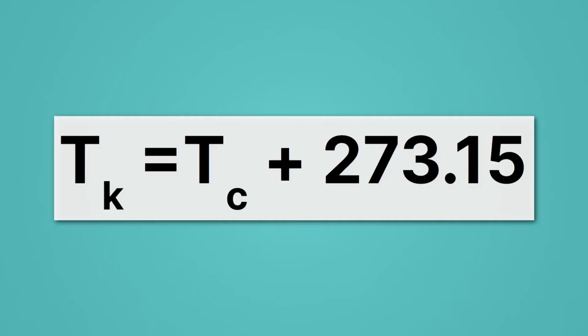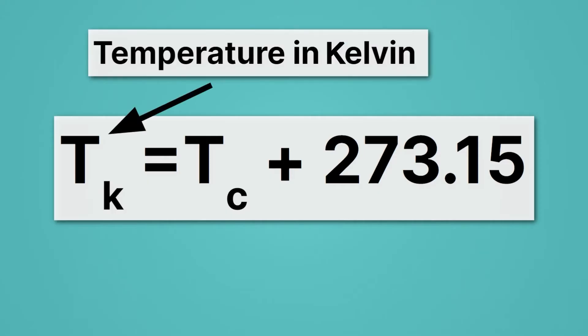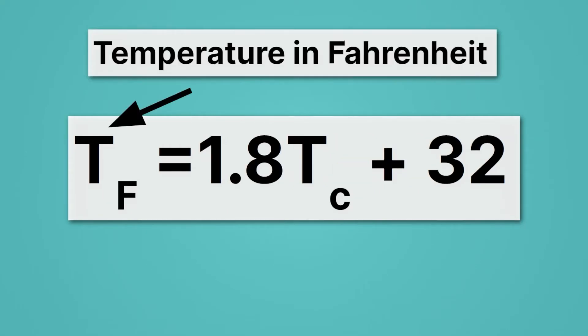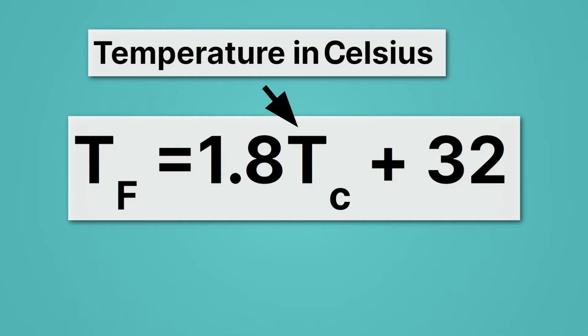We can convert between temperatures in different scales using equations like this. This converts between TK, which is temperature in Kelvin, and TC, which is temperature in Celsius. So to complete this conversion, all we'd have to do is take our temperature in Celsius and add 273.15 to it. And that would give us our temperature in Kelvin. We can also convert between Fahrenheit and Celsius. Here TF represents temperature in Fahrenheit, and TC represents temperature in Celsius.